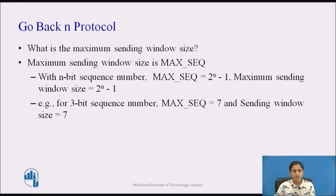With an n-bit sequence number, the maximum sequence number is 2^n − 1 and the maximum sending window size is 2^n − 1. For example, for a 3-bit sequence number, max_seq = 2^3 − 1 = 7, and window size is 7. The maximum number of frames that may be outstanding at any instant is not the same as the size of the sequence number space. For go-back-N, max_seq frames may be outstanding at any instant, even though there are max_seq + 1 distinct sequence numbers, which are 0, 1, up to max_seq.